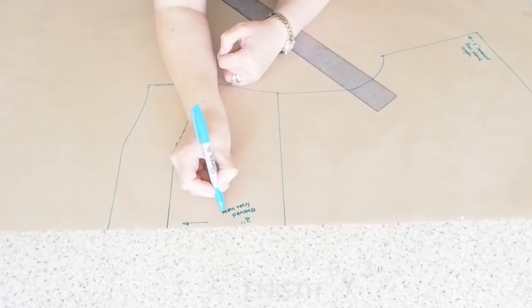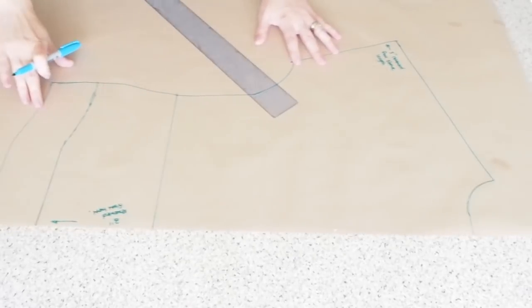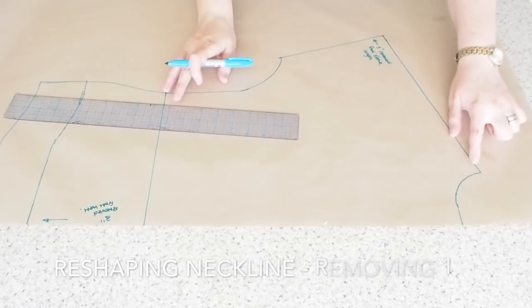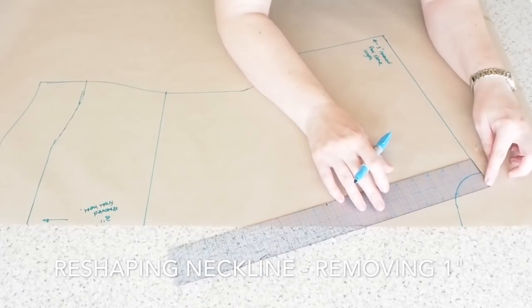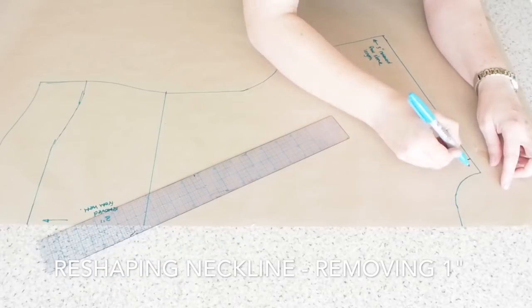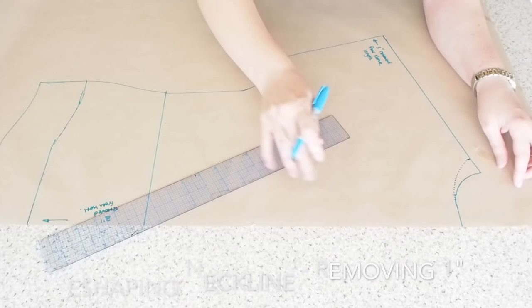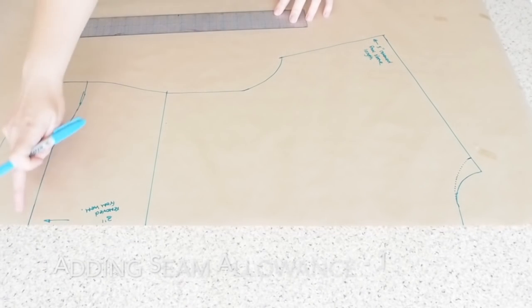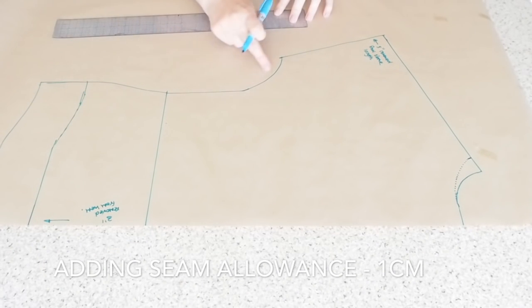And now I want to reshape the neckline. So I want this to be a t-shirt that I can just pull over my head. So I'm taking one inch off the neck at the shoulder and just redrawing in a nice curve for the new neckline.